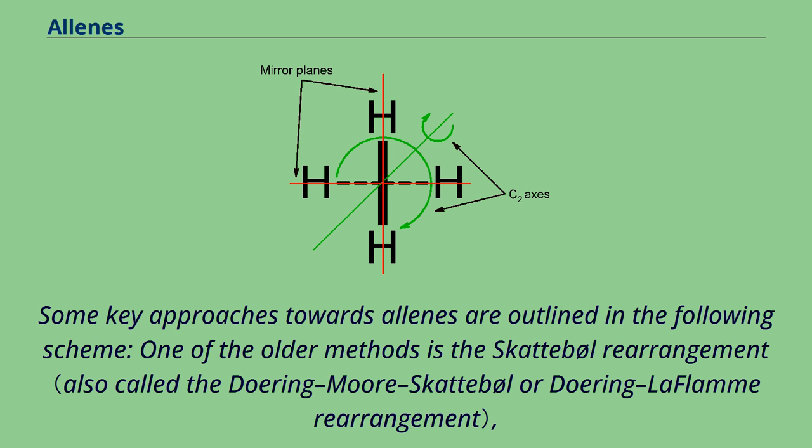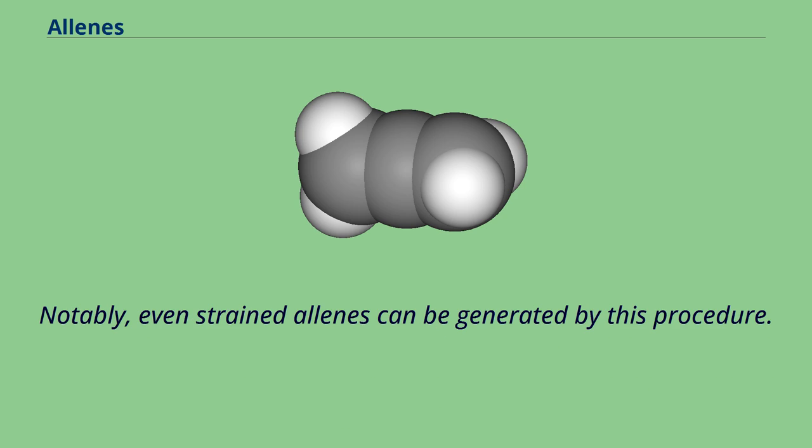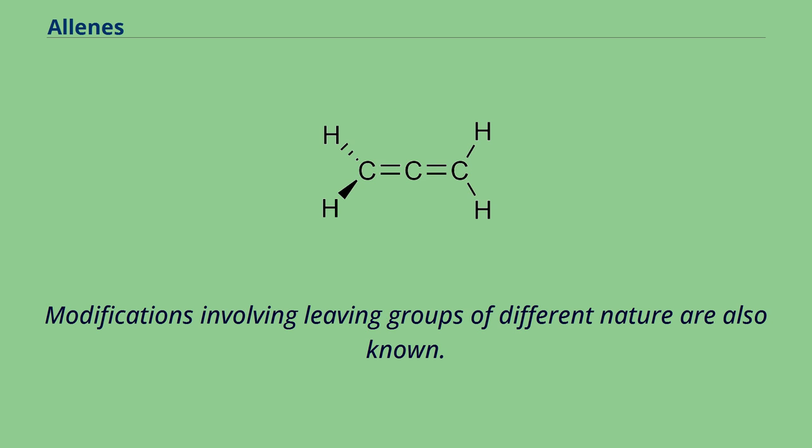In which a gem-dihalocyclopropane is treated with an organolithium compound and the presumed intermediate rearranges into an allene either directly or via carbene-like species. Notably, even strained allenes can be generated by this procedure. Modifications involving leaving groups of different nature are also known.